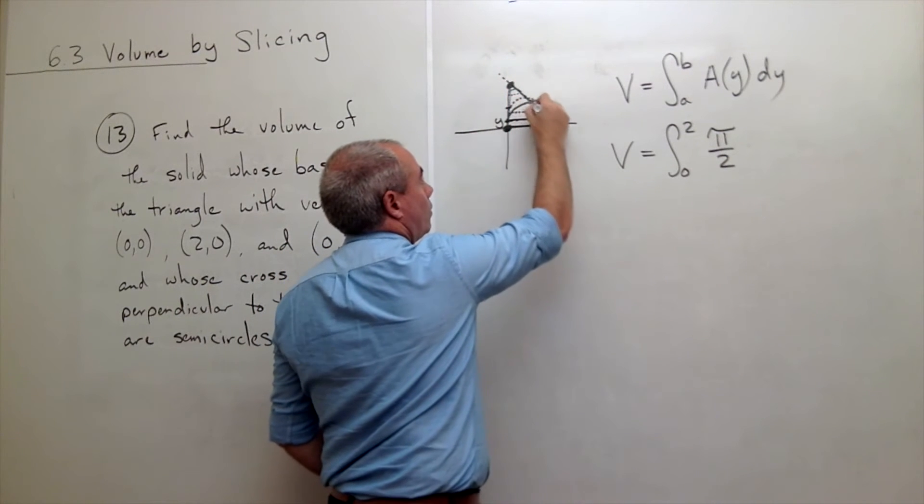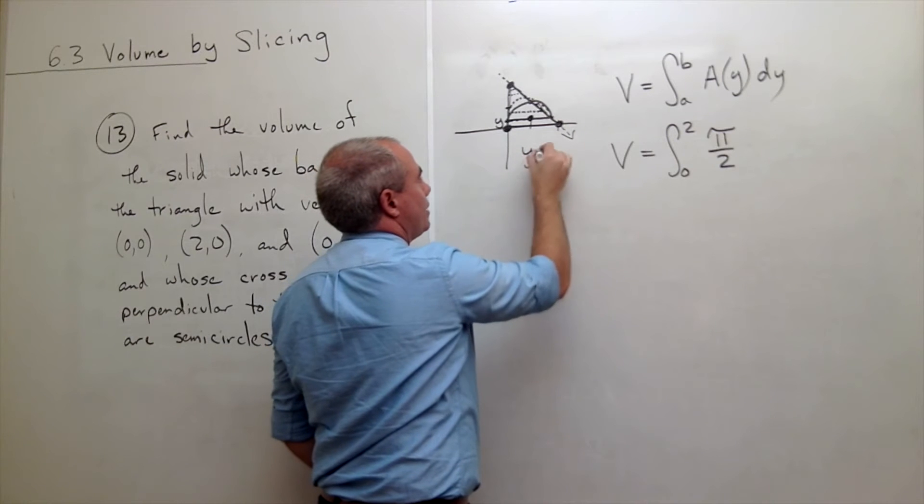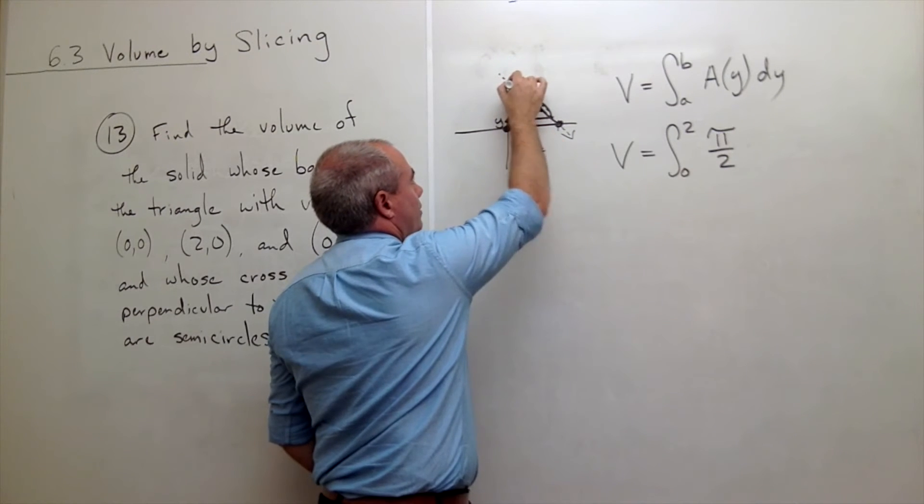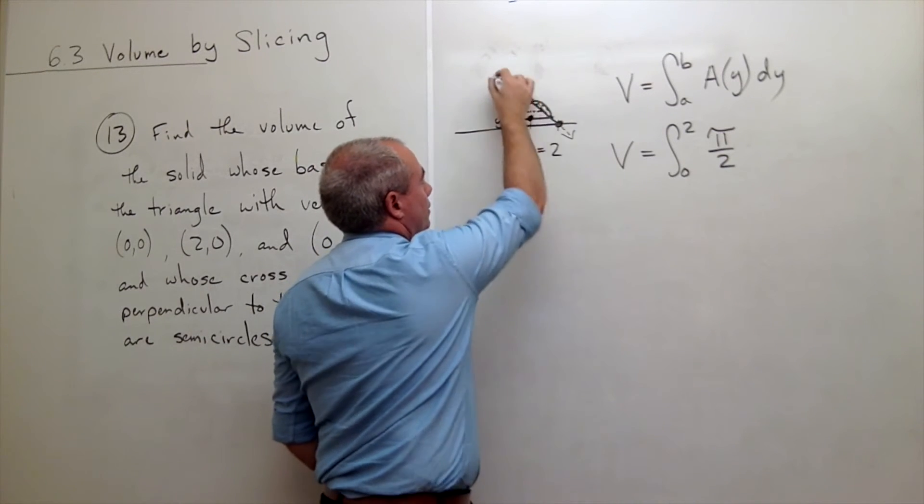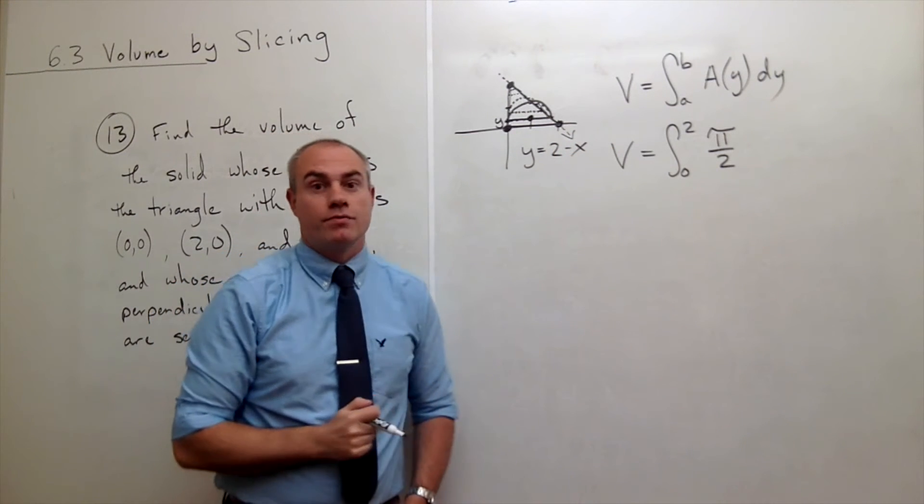First of all I guess I need to know what's this function? Well this is just y equals—the y-intercept of that line is 2, the slope is minus 1—so that's just the line 2 minus x.